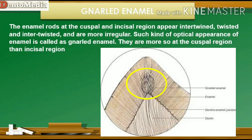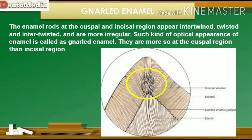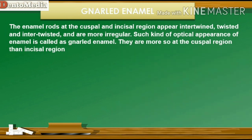Gnarled enamel refers to enamel rods at the cuspal and incisal region that appear intertwined, twisted, and more irregular. Such optical appearance of enamel is called gnarled enamel. It is more pronounced at the cuspal region than the incisal region. Gnarled enamel aids in resisting the high masticatory loads without fracture that the cusps have to bear.